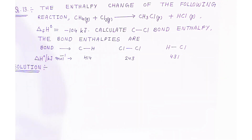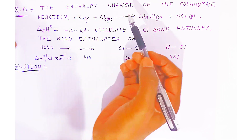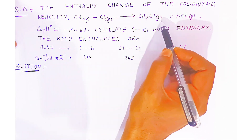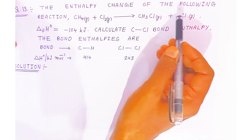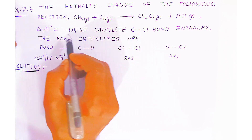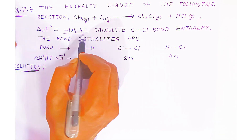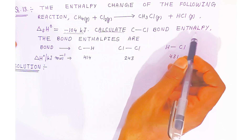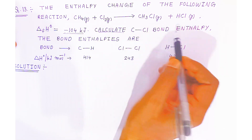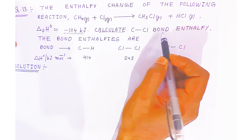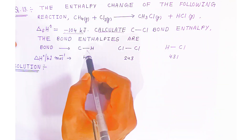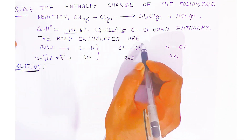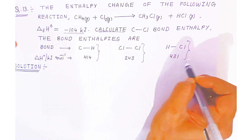In question 13 we have enthalpy change. The question is: given the enthalpy change of the following reaction — methane gas reacts with chlorine gas to give methyl chloride gas and HCl gas. The enthalpy change, delta H° of reaction, is given as minus 104 kilojoule. We have to calculate the carbon-chloride bond enthalpy, given: C-H bond enthalpy = 414 kJ/mol, Cl-Cl bond enthalpy = 243 kJ/mol, and H-Cl bond enthalpy = 431 kJ/mol.